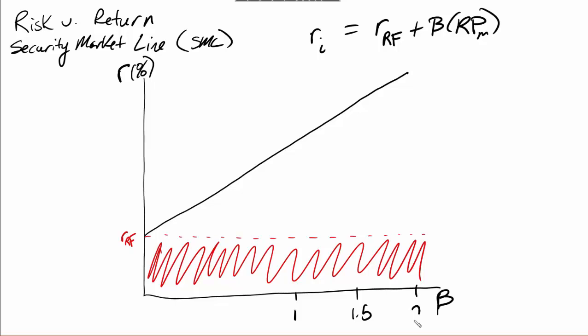Beta runs from zero at our horizontal axis. If I have a beta of zero, that means the return on that particular stock is going to be equal to the risk-free rate, which is where this intersection point is. Then we move along between 0.5, 1, 1.5, and 2. If we have a beta of one, that means the return on that stock should equal the market return.